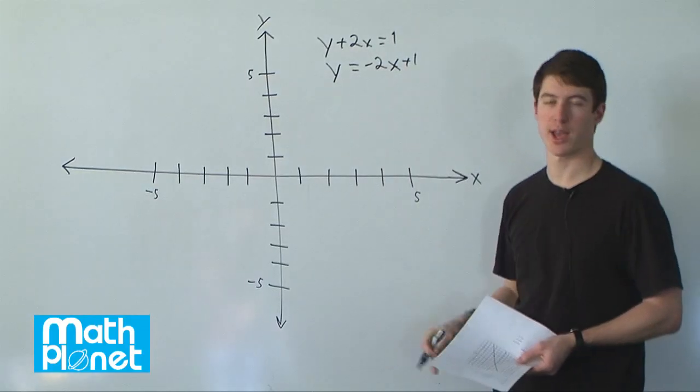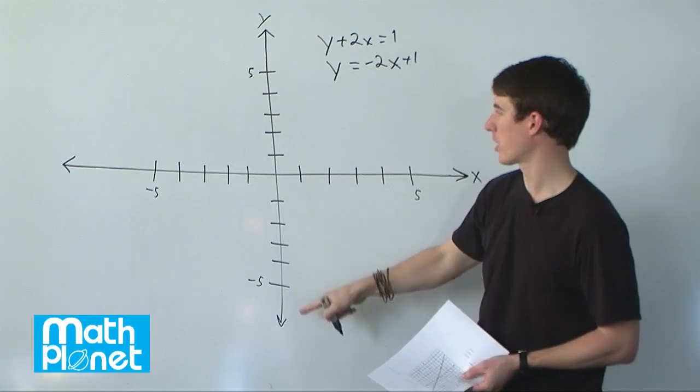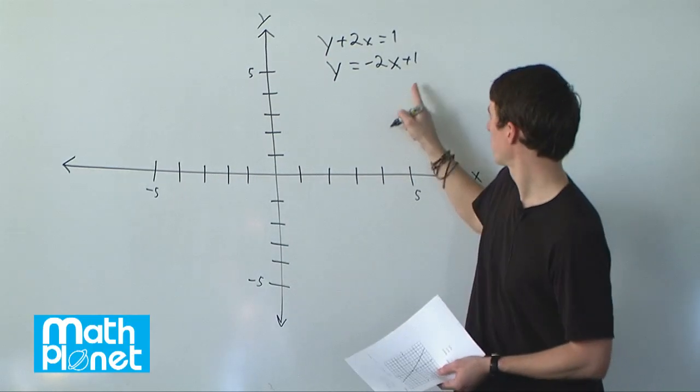The slope is just the coefficient in front of the x, and the plus 1 is our y-intercept. Y-intercept meaning where it crosses this axis here, so that's 1.